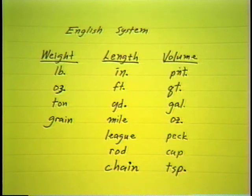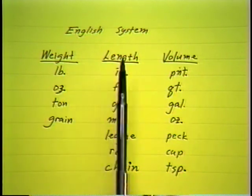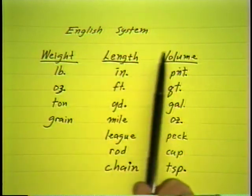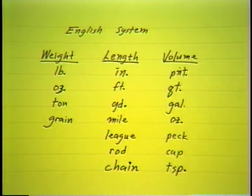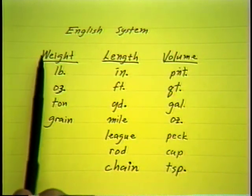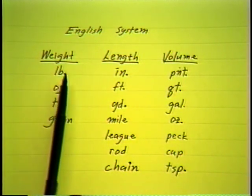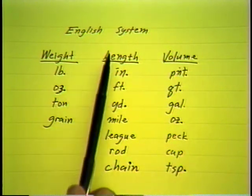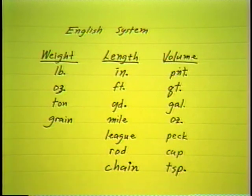Let's look at our English system once again. Just look at the number of units of measure we have in each kind of physical situation. In weights we have pounds, ounces, tons, grains, and many others. In length: inches, feet, yards, miles, league, rod, chain, and many, many more.